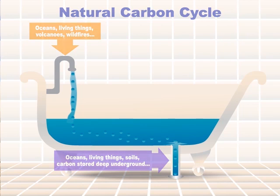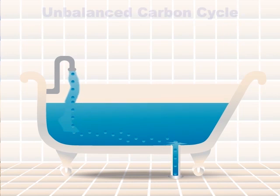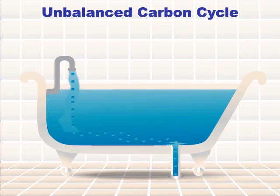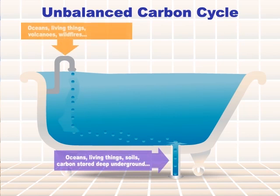But what happens if you add water to the bathtub faster than it can drain away? The tub will fill up and eventually overflow. Something similar is happening in the atmosphere — people are burning lots of fossil fuels and adding carbon dioxide faster than it can be removed, so the atmosphere is getting overloaded with carbon dioxide.